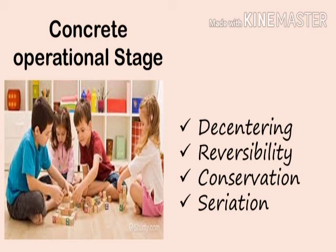Lastly, we have seriation — the ability to order or arrange things in a series based on one dimension such as weight, volume, or size. For example, as a teacher, you would let children arrange objects according to height or color, from tallest to shortest. The child can now categorize things based on identifying features. This is what we call seriation.